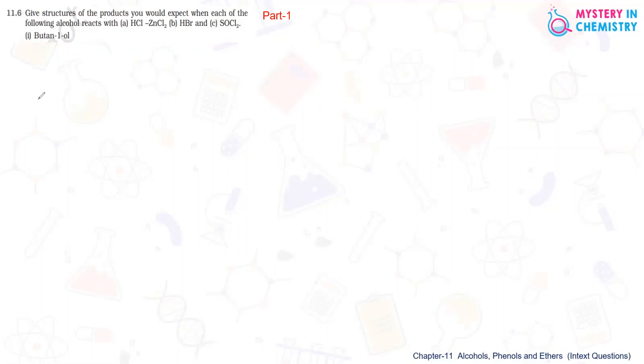In question number 11.6, give structures of the products you would expect when each of the following alcohol reacts with HCl, ZnCl2, HBr and SOCl2.